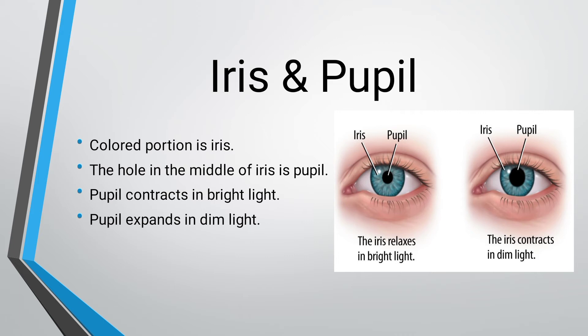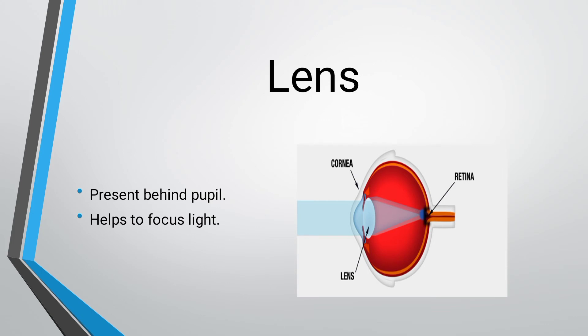The colored portion is the iris, and the pupil is the black part which is a hole in the center of the iris. The function of the pupil is that it contracts and expands depending on the amount of light. In bright light, the pupil will contract, and in dim light, the pupil will expand, as shown in the diagram. The iris and pupil are inversely related.